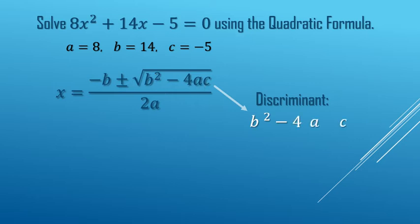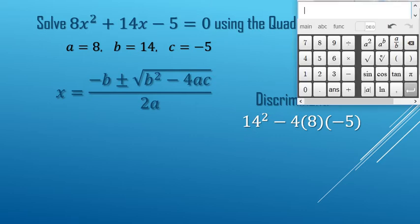We're going to do the b squared minus 4ac part first. That is called the discriminant. Let's replace those with their values and go to a calculator. So here we're going to do 14 squared, there's your b squared, minus 4 times the a is 8 times negative 5 for the c, and we get 356 for the value there.